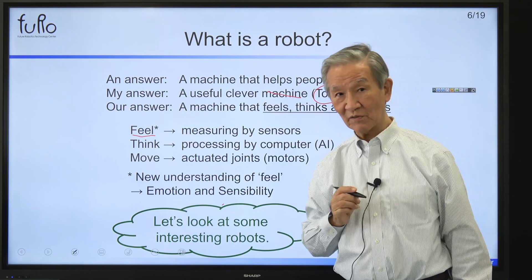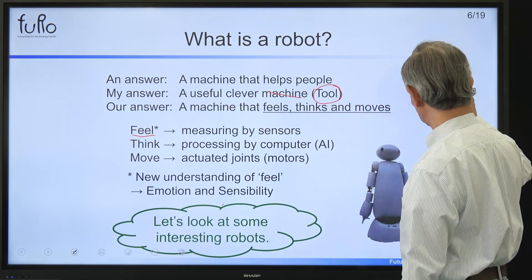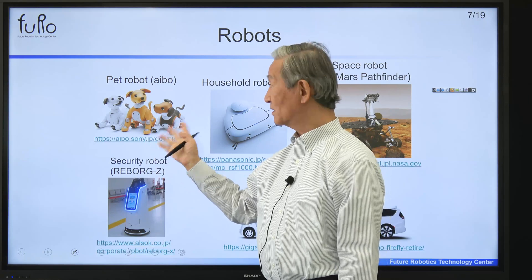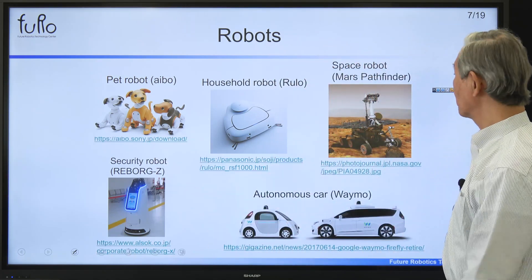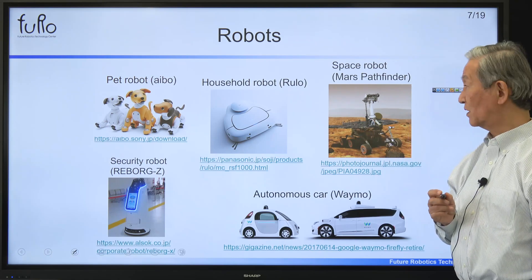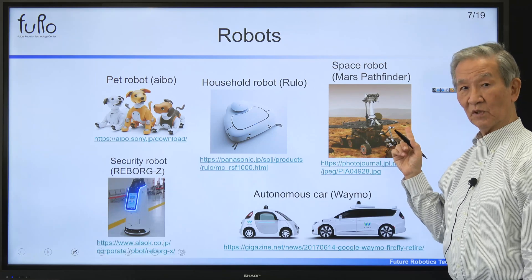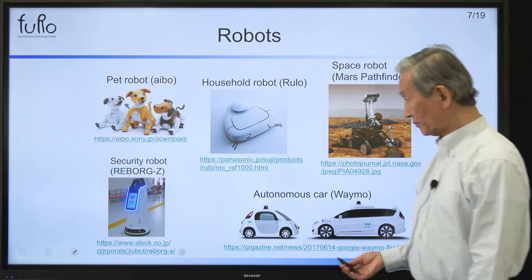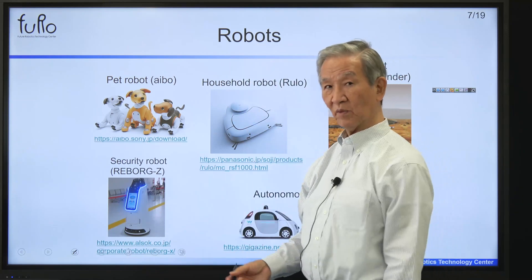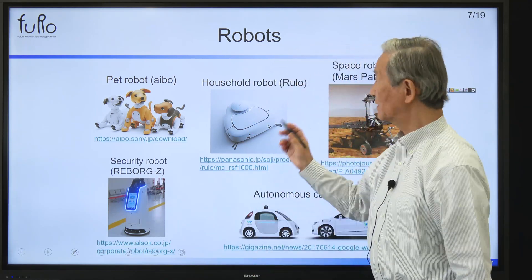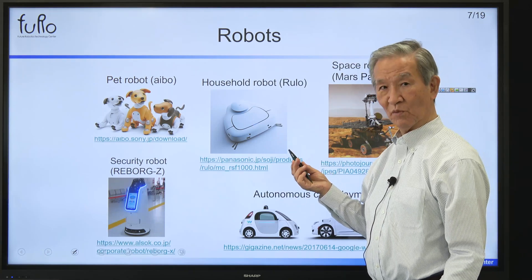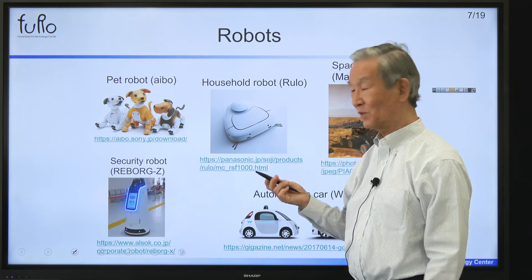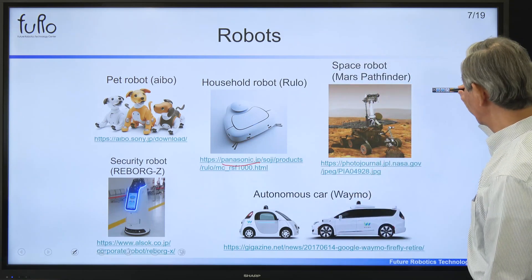Let's look at some interesting robots. Here are some of them: AIBO — probably you're familiar with the first generation AIBO; this is the second generation AIBO, which came out recently. This one here is the Mars Pathfinder; the original was sent to Mars and the newer one will go there soon. Those cars are autonomous cars developed by Google. And this one here is a security robot working at one of the airports in Japan. This is a household robot, a lot more intelligent than a Roomba — called Rural — and we developed it; Panasonic is selling this machine.